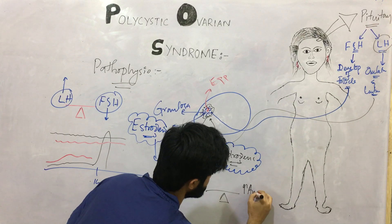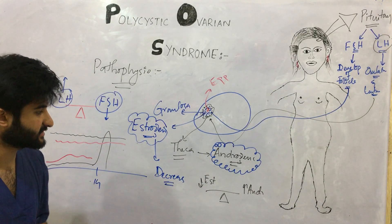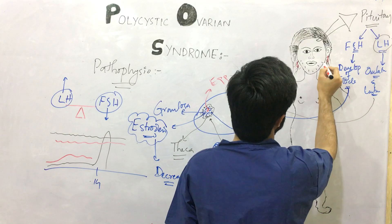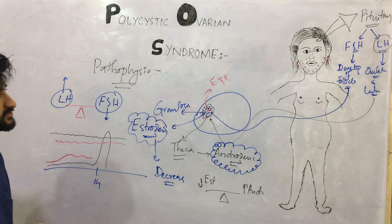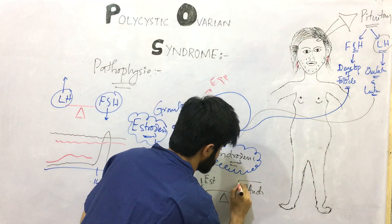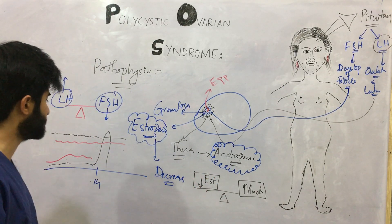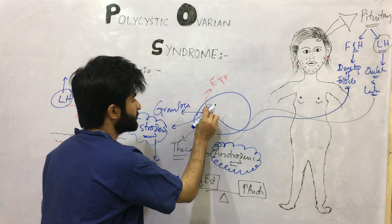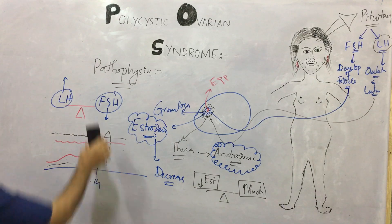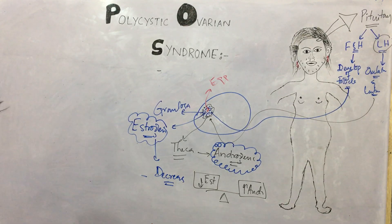Due to the imbalance of LH and FSH, we have greater androgens and less estrogen in the body. Because androgens are greater, this female will develop hirsutism — she will have a male pattern of facial hair. Due to decreased estrogen, the follicle is not growing and is not secreting much estrogen, so there will be menstrual abnormalities in this patient.